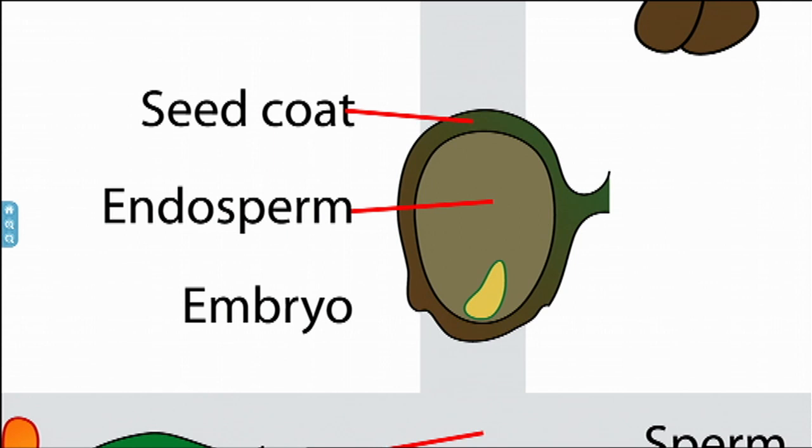That embryo then sits in the endosperm and it grows just a little bit. It needs the endosperm there to germinate once it gets into the right conditions to become a plant again. The outside of the ovule hardens and becomes a seed. But now we're still stuck in this problem — the seed, we've got a baby plant, but the seed is inside the carpel tissue, inside the flower, perhaps at the top of a tree. How do we get a new plant?